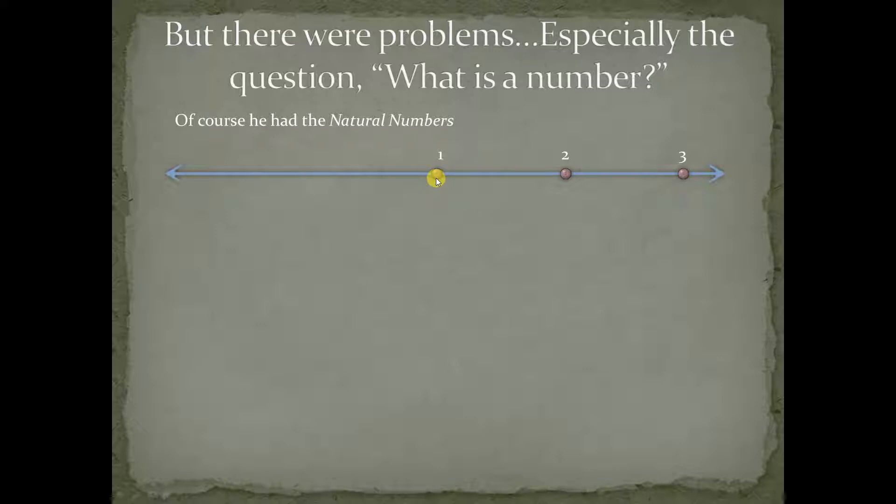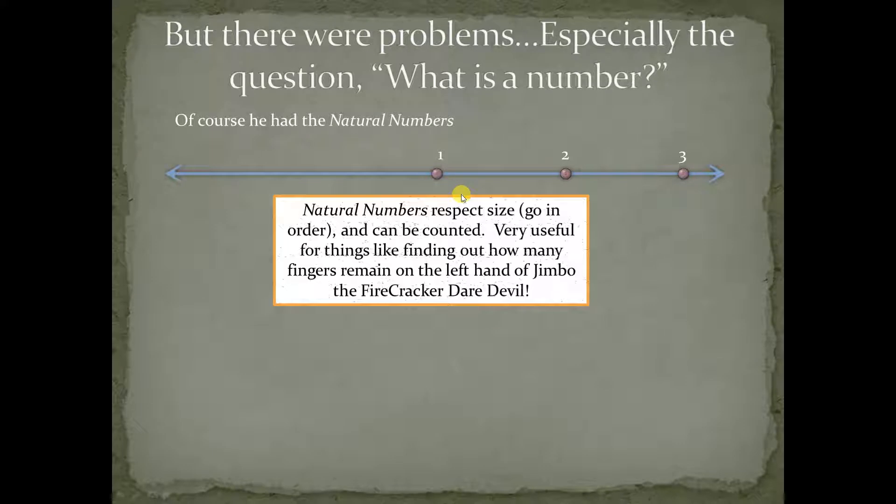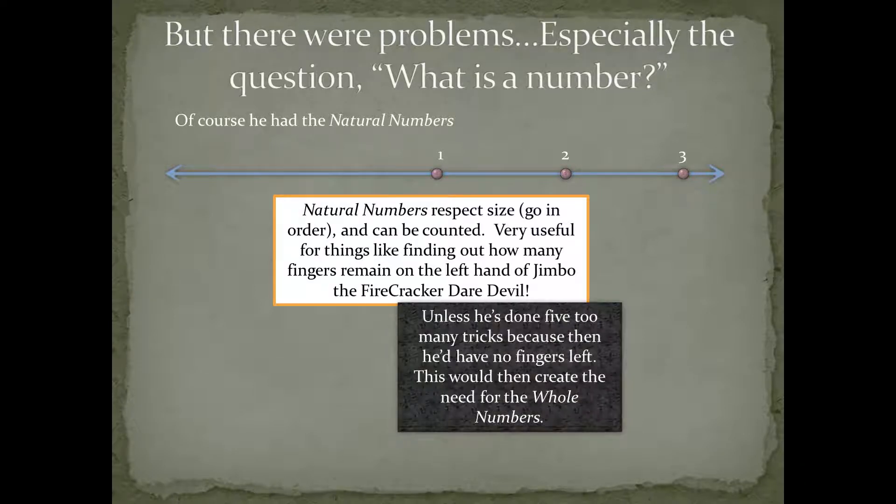He did have the natural numbers, which, kind of like caveman numbers, they start with one, two, three, four. Just counting numbers. Like, if you had Jimbo the firecracker daredevil, and he wanted to count how many fingers he had left, it would be a natural number. Unless he did five too many tricks. Then he'd have no fingers. That would take him from the natural numbers to the whole numbers. The whole numbers are the natural numbers and zero.